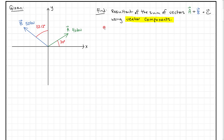The trig identities we're going to use are just sine, cosine, and tangent. Sine is the opposite over the hypotenuse. Cosine is adjacent over hypotenuse. Tangent is opposite over adjacent. When we look at vectors, we can look at them as right triangles.